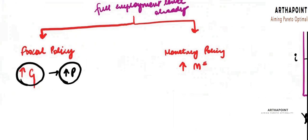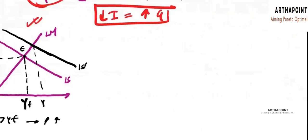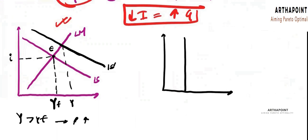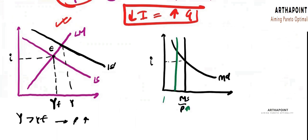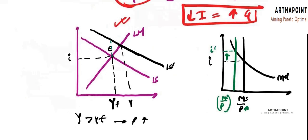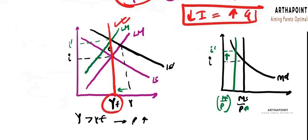When prices started increasing, the real money supply started decreasing. Back in the money market, if this was the supply of money and this was the demand of money at the initial interest rate, the supply of money started decreasing in real terms because P started shooting up — MS by P decreased — and you saw an increase in the interest rate. So the LM started shifting backward because there was a decrease in the real money supply, and there was an increase in the interest rate. You went back to the same level of output because this is the full employment level of output — you cannot exceed this. There was full crowding out.